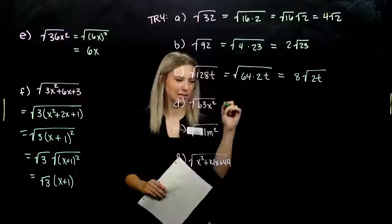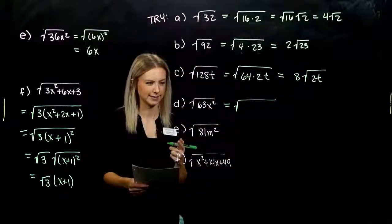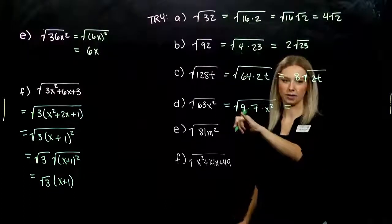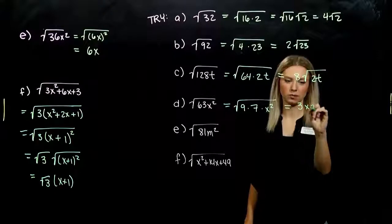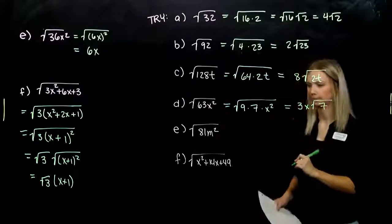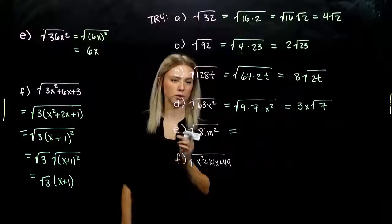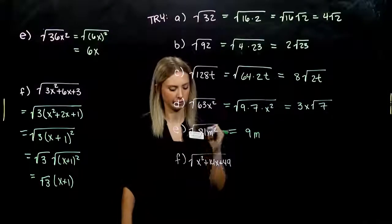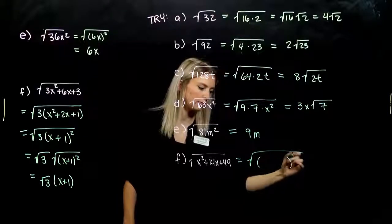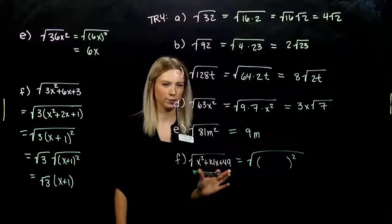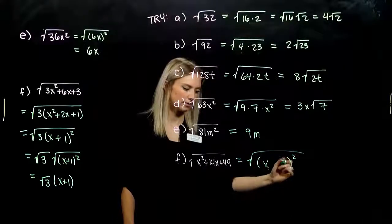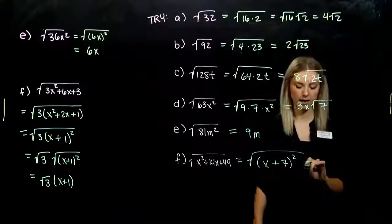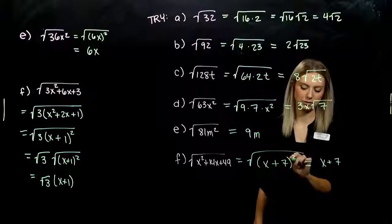For part D, √(63x²): break 63 into 9 × 7, and x² is a perfect square. That evaluates out to 3x√7. For part E, √(81m²): both 81 and m² are perfect squares, so √81 = 9 and √(m²) = m, giving 9m. For the last problem, we check if the trinomial under the radical is a perfect square trinomial — it is, requiring x and 7, with a positive sign in the middle. Evaluating gives (x + 7), since the radical undoes the square.